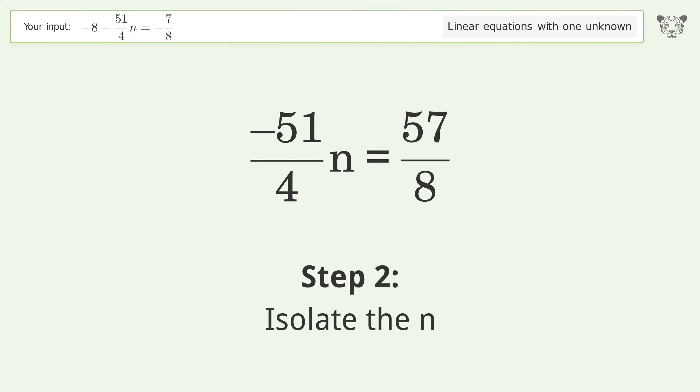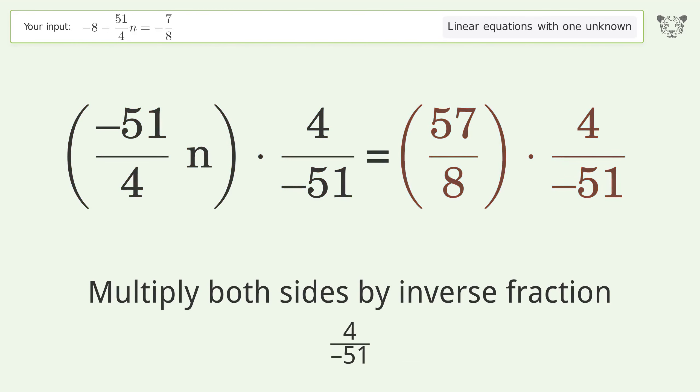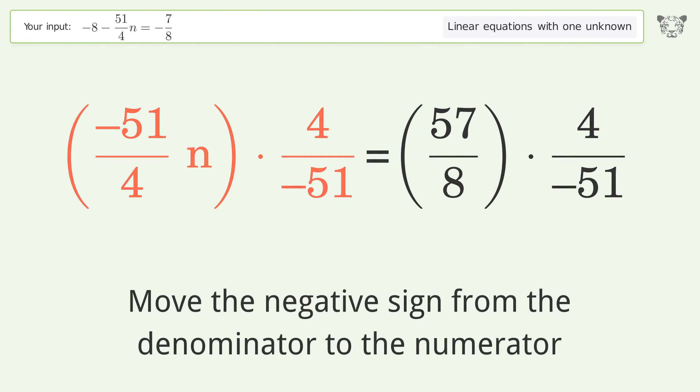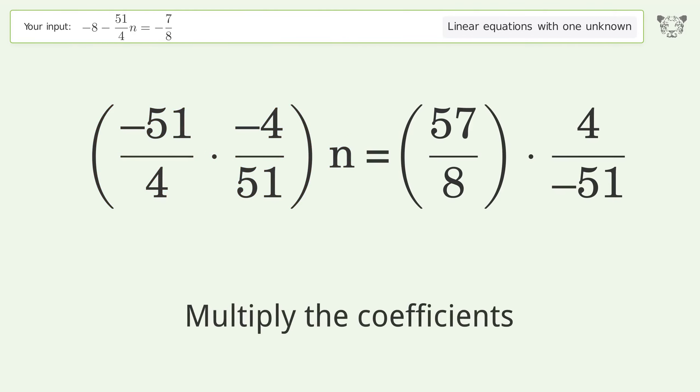Isolate the n. Multiply both sides by inverse fraction 4 over negative 51. Move the negative sign from the denominator to the numerator. Group like terms. Multiply the coefficients.